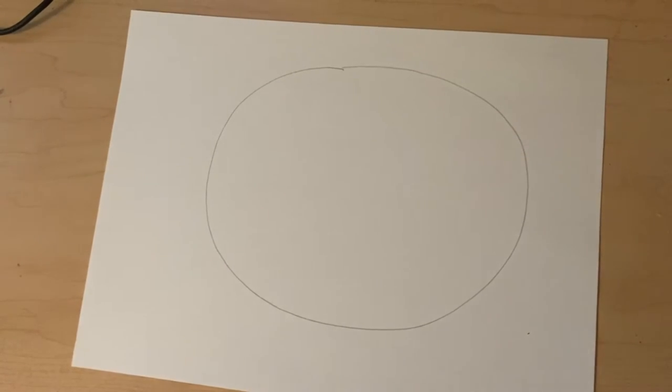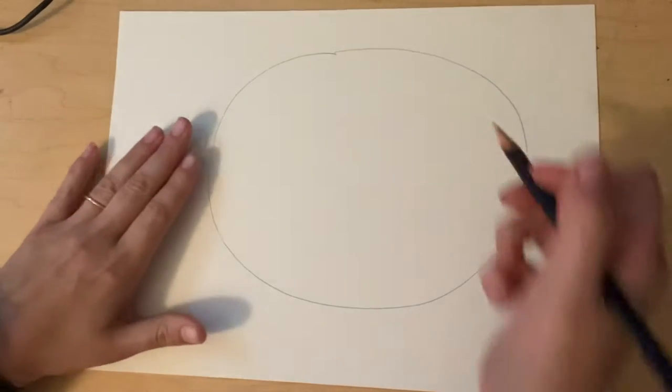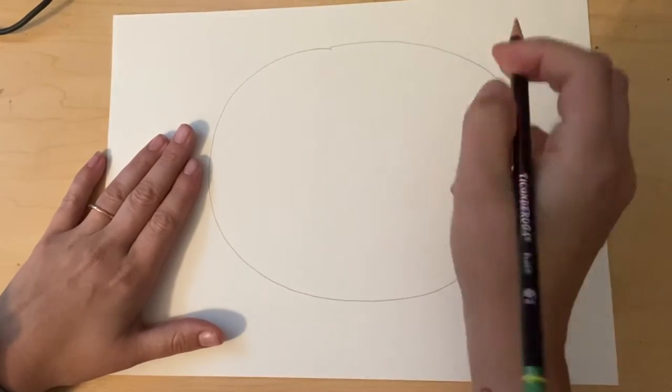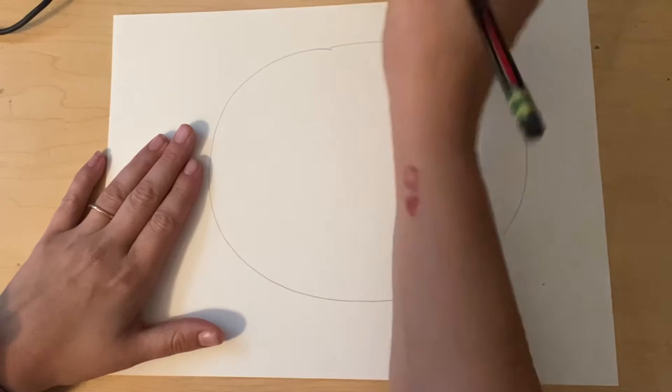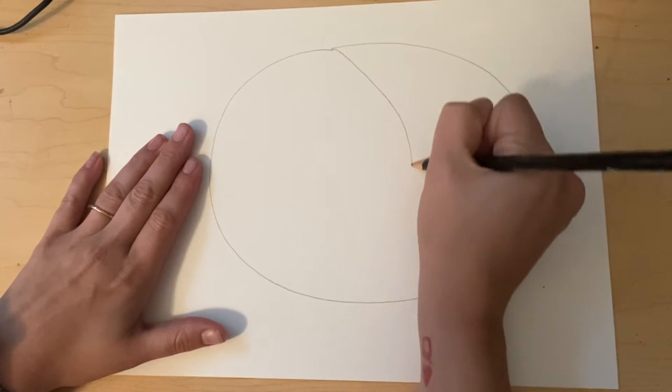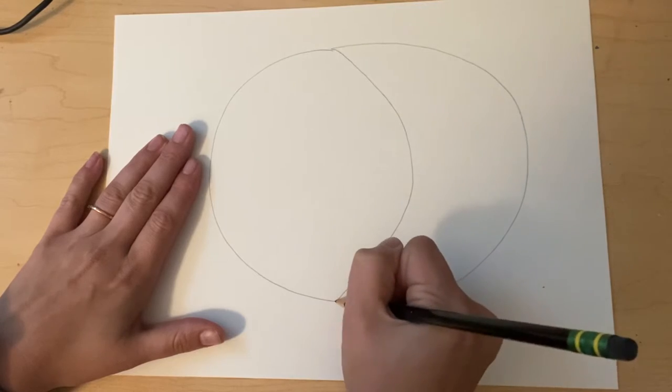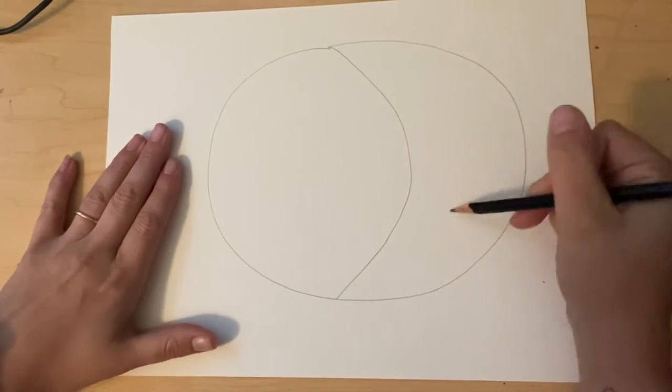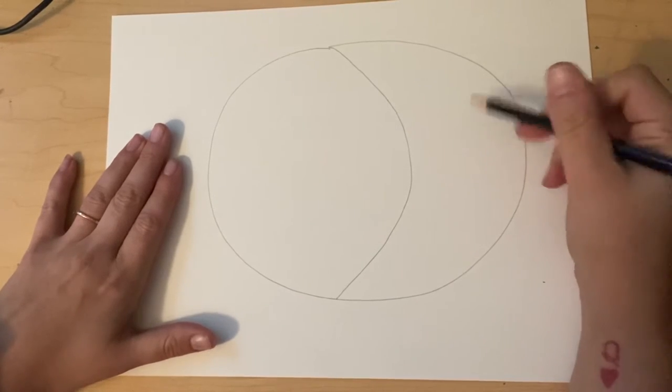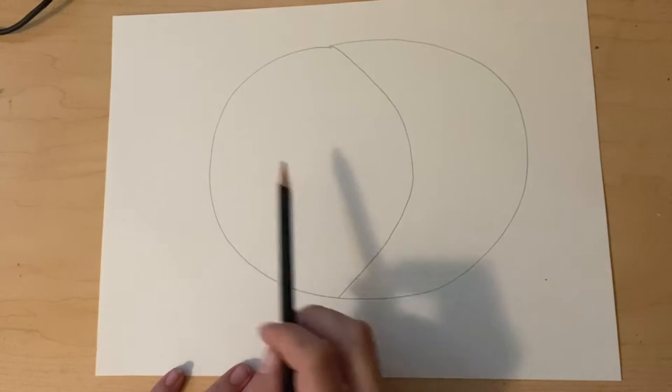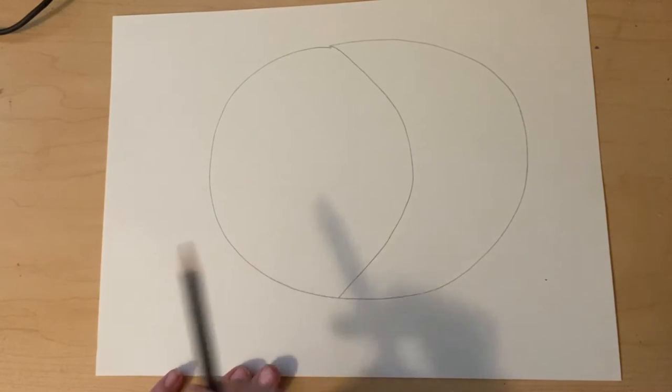So here's my circle and the first thing I'm going to do is draw a shape in the middle to separate the moon side from the sun side. I'm going to draw a curved line down the middle like that. Everything on this side is going to be the moon side, so I'm going to be using my cool colors. Everything on this side is going to be the sun side, so my warm colors will be used on this side.